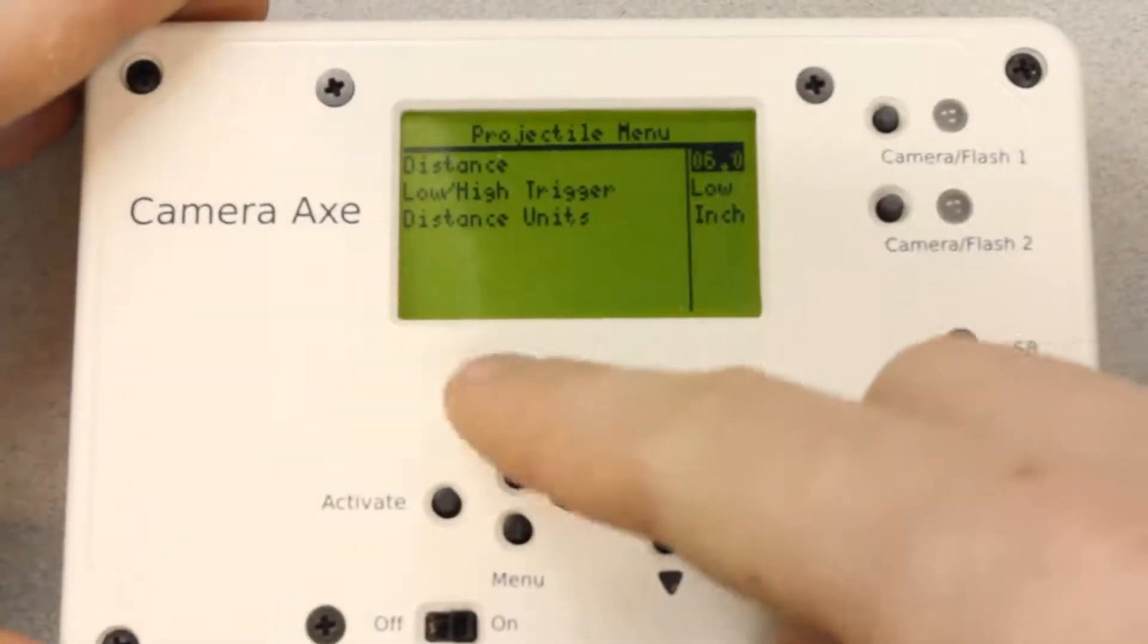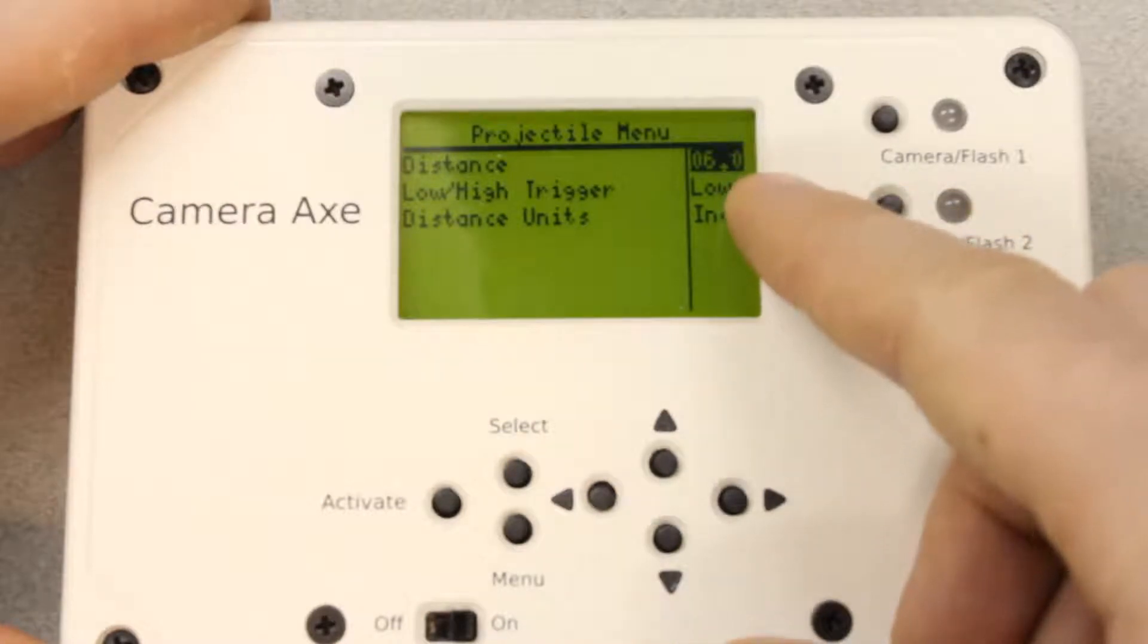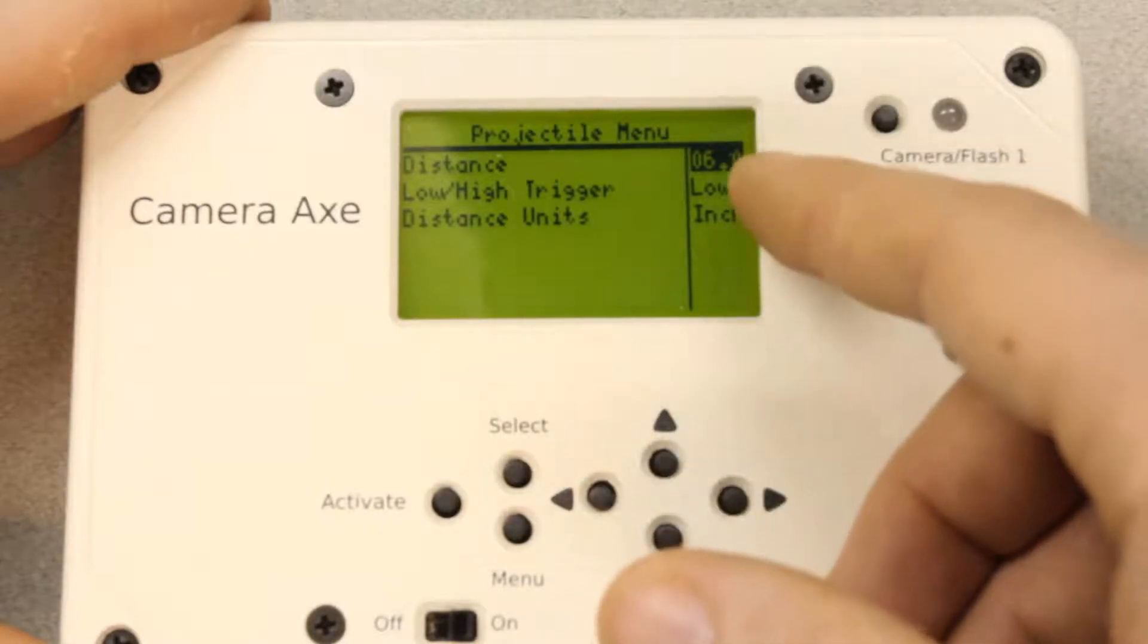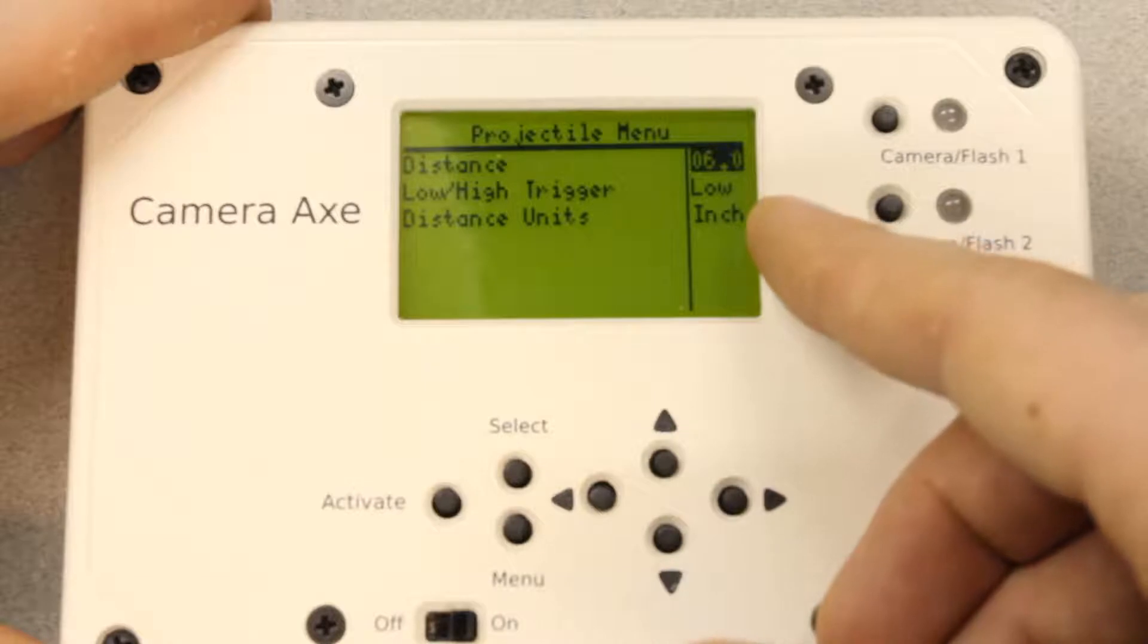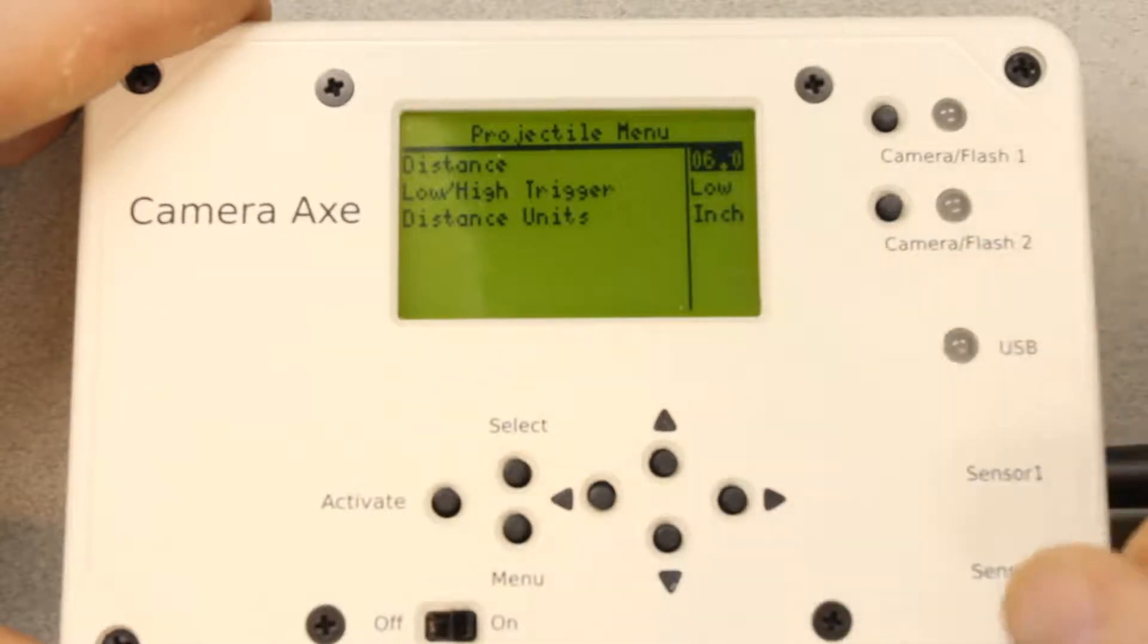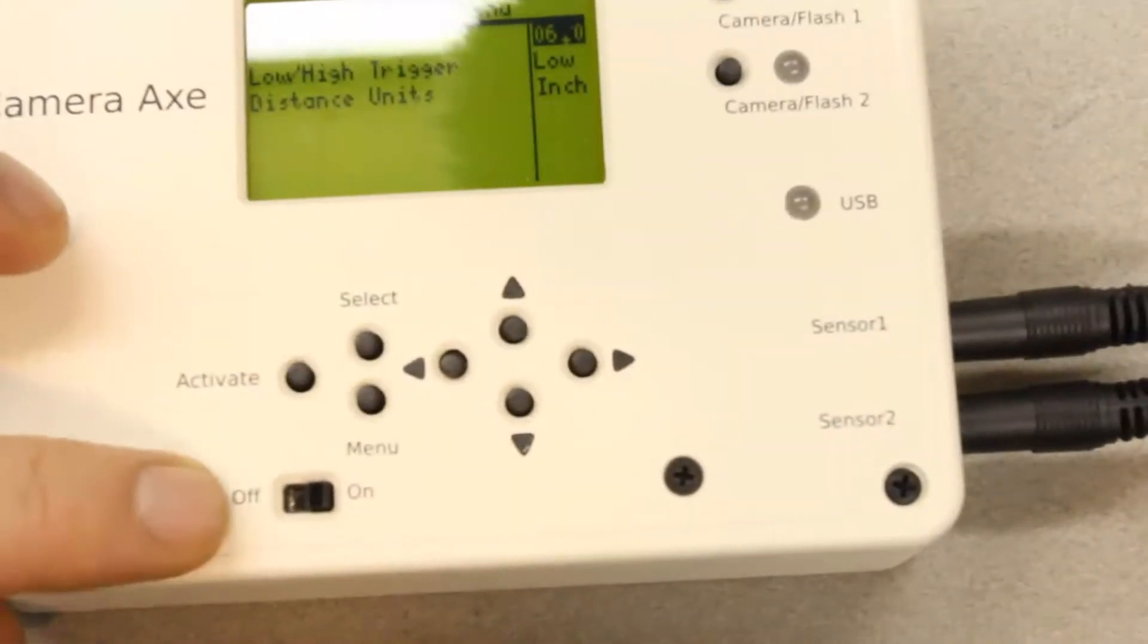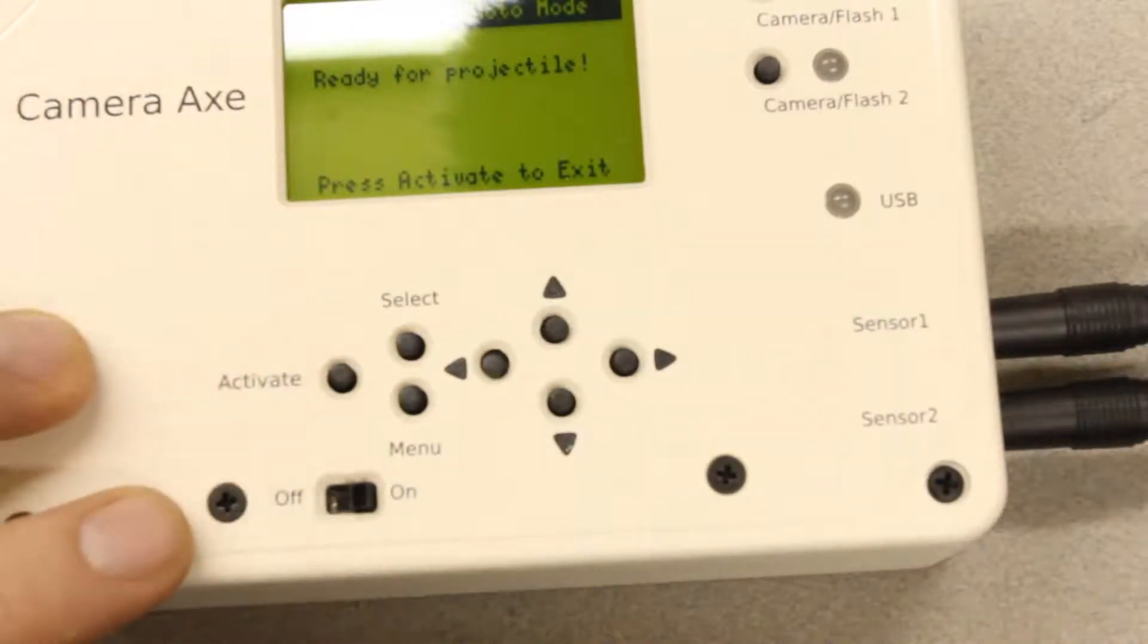Back on the menu, high and low—this is just there for a really old version of the projectile sensor. It hasn't been around for years. You always want that set to low with this projectile sensor. And the distance, you can switch between inches and centimeters. And then when you hit activate, everything is ready.